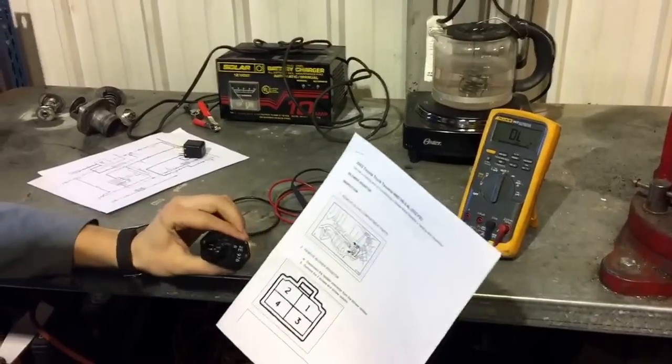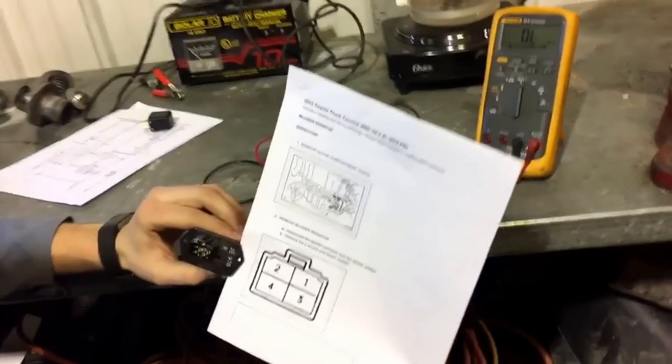So we printed off the diagram. We need to check from 1 to 4, 1 to 3, and 1 to 2.